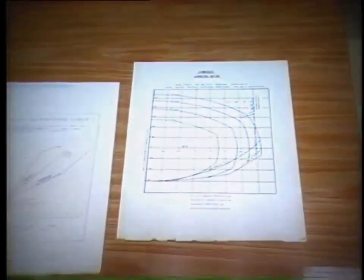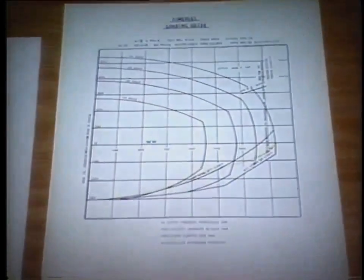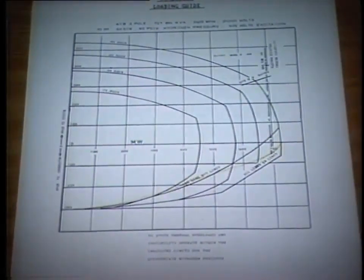For each specific generator, this curve is normally displayed in the control room. Make sure that you always operate the generator within these limits, whether you are supplying megawatts and absorbing or supplying megavars.